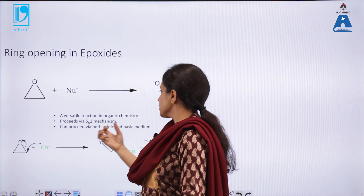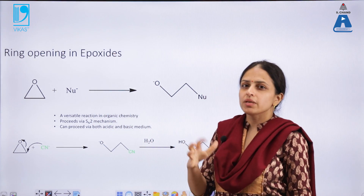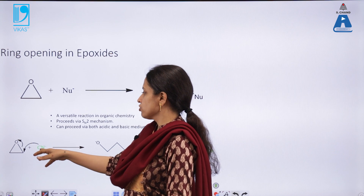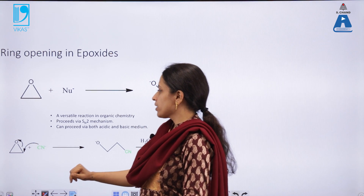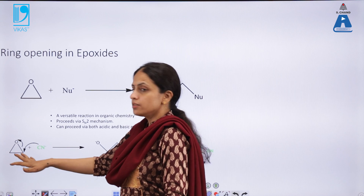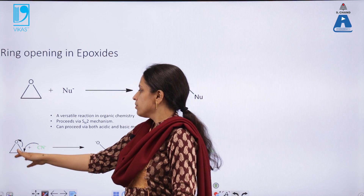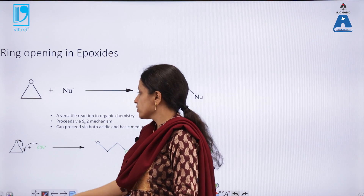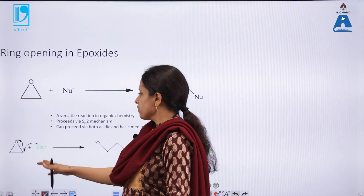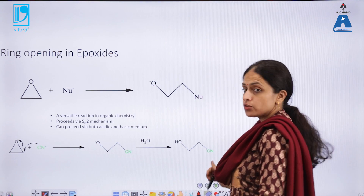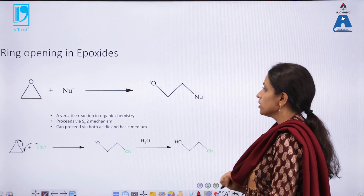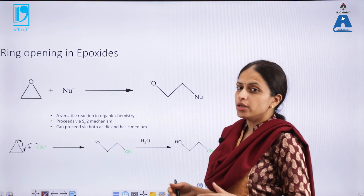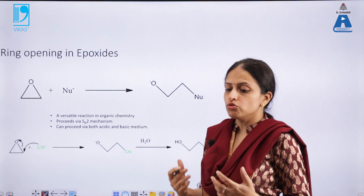Epoxide ring opening proceeds via both acidic and basic medium. For example, in the presence of cyanide, the epoxide ring can open from both sides — it doesn't matter because it has similar groups or atoms on both sides. In the presence of CN negative, the epoxide ring opens to give an open chain structure bearing both an OH and a cyano group. Epoxide ring chemistry can be extended to a variety of other functional molecules.